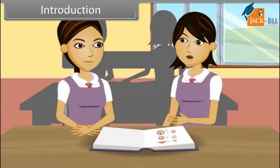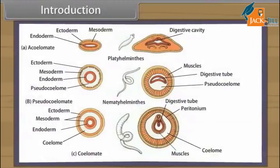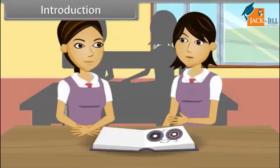Some are asymmetrical, e.g. snails. On the basis of body cavity, animals are either acoelomates, e.g. cnidarians and flatworms, or pseudocoelomates, e.g. nematodes. According to the presence or number of germ layers, animals are either diploblastic, e.g. sponges and cnidarians, or triploblastic, e.g. flatworms to mammals.